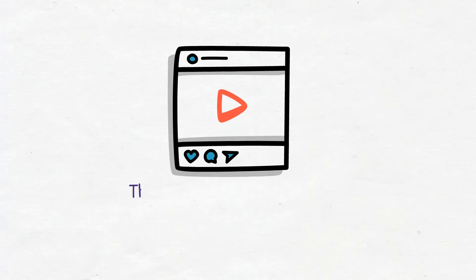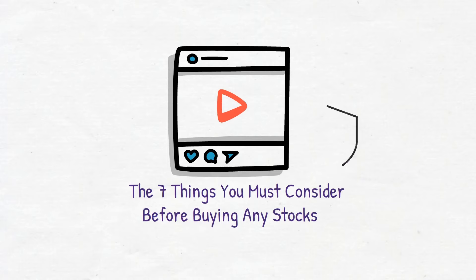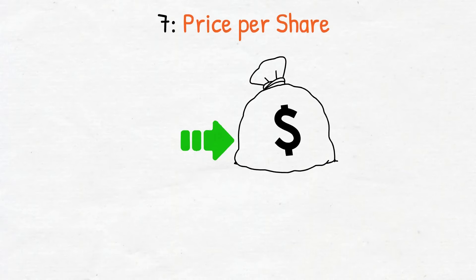In today's video we'll learn the seven things you must consider before buying stocks. Never buy any stocks without considering these seven things. Number seven: price per share. One reason it is more convenient to evaluate investments in common stock on a price per share basis is that major daily newspapers consistently report this particular data in their stock market quotations.